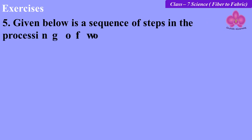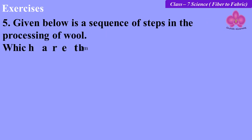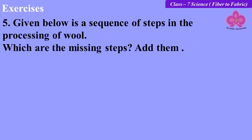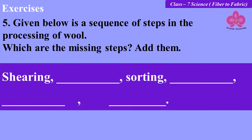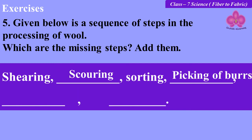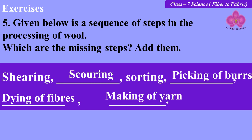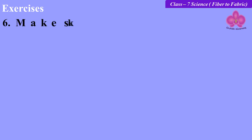Given below is a sequence of steps in the processing of wool. Which are the missing steps? Add them. The answer is: scouring, picking of burrs, dyeing of fibers, making of yarn.